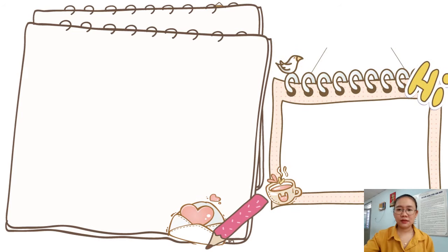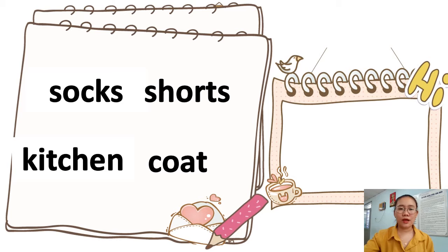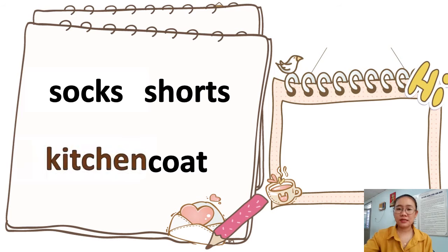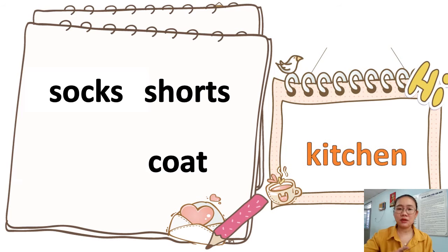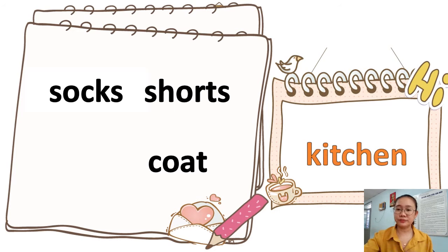Number two: we have socks, shorts, kitchen, and coat. What is different? Of course — kitchen! Because socks, shorts, and coat are clothes, but kitchen is a room.